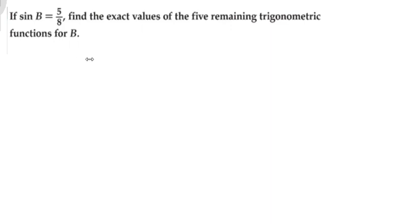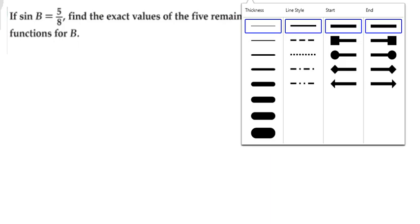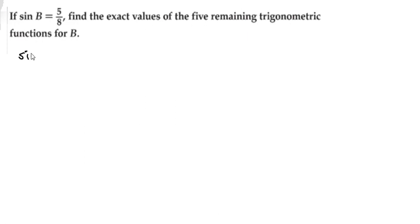All right, so now that we've gone over using the Pythagorean Theorem, let's do a problem where we're going to have to tap into it and use it. So they're giving us sine of b in parentheses equals 5 over 8. It says find the exact value of the remaining trigonometric functions for b.